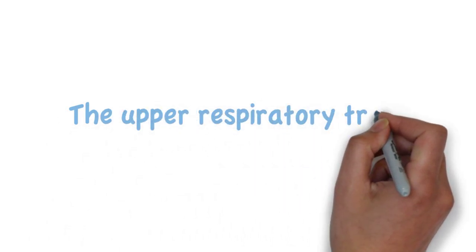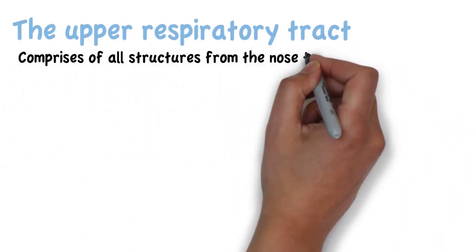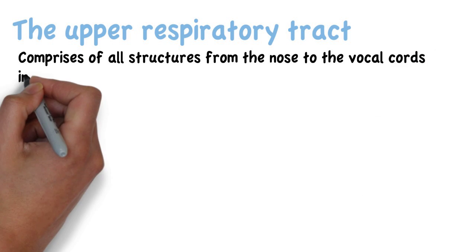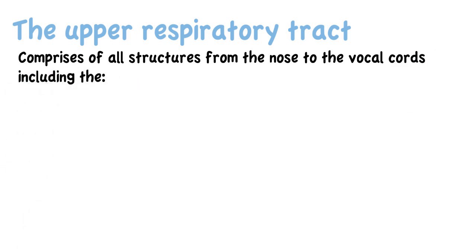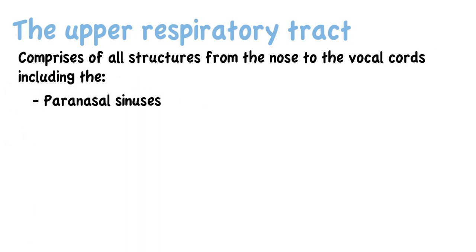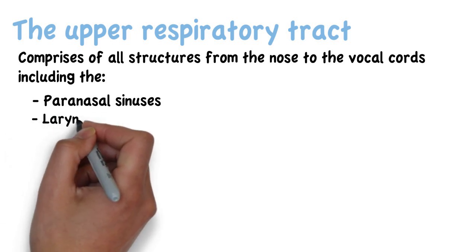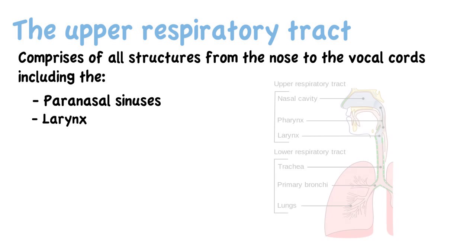The upper respiratory tract comprises all structures from the nose to the vocal cords, including the paranasal sinuses. There is mixed literature as to whether the larynx is part of the upper or lower respiratory tract; however, in this video, it would be regarded as part of the upper respiratory tract.